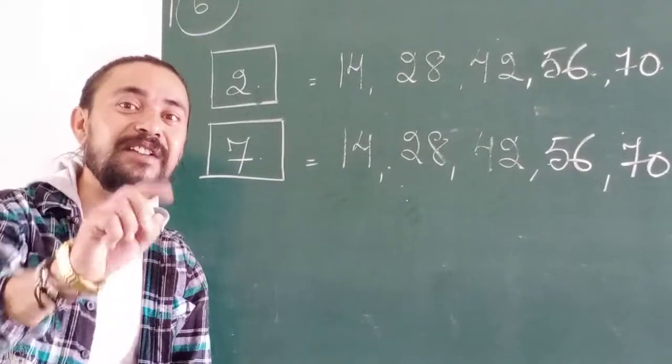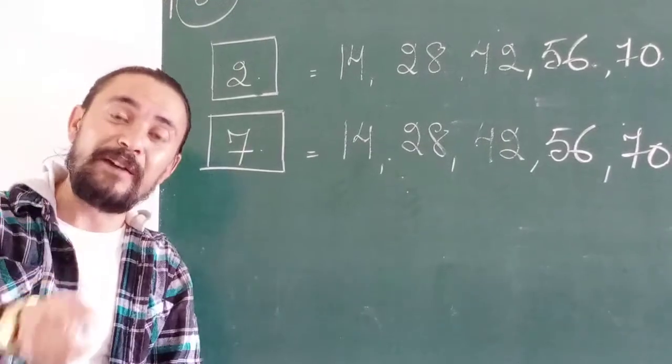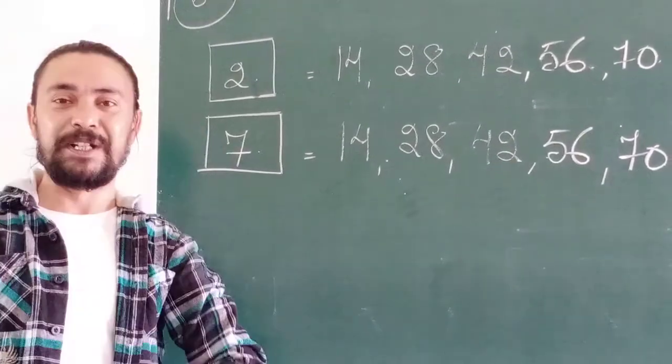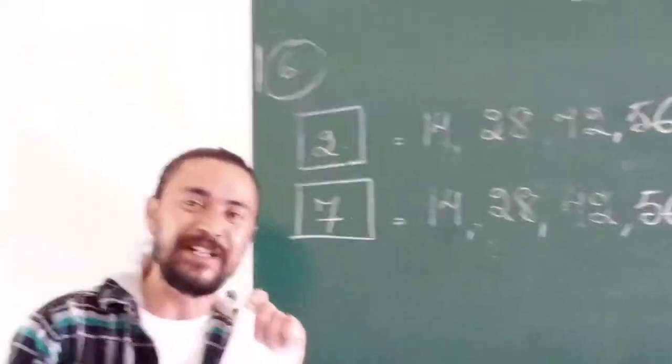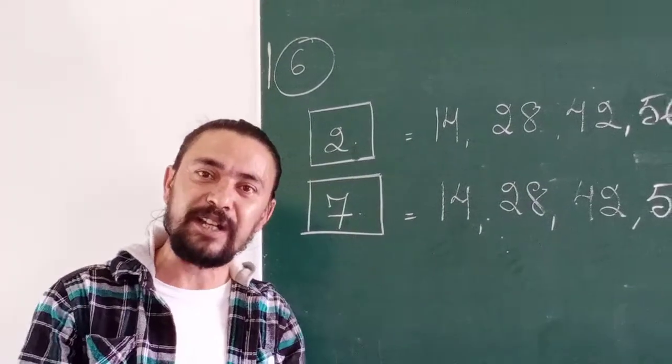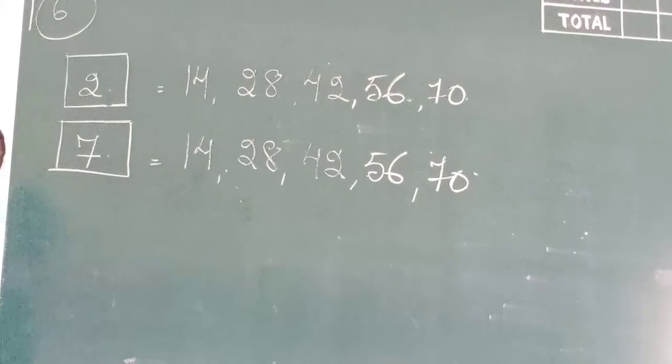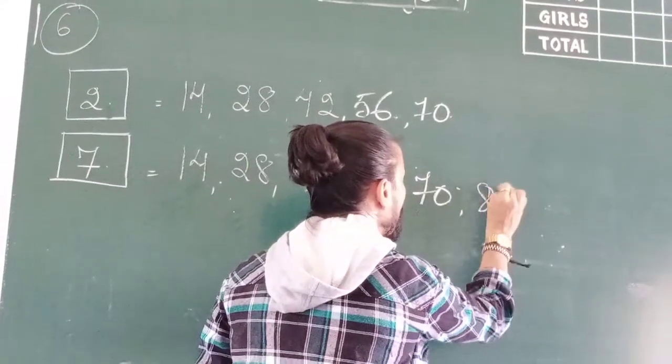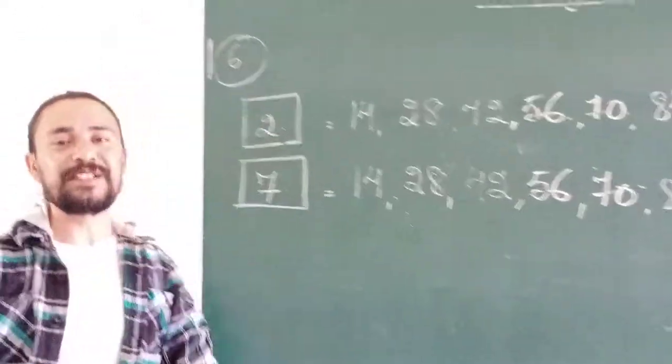7, 10s, 7, 11s are 77. 77 is an odd number. It cannot be divided by 2. 7, 11s are 77, it's an odd number. So it won't fall in the multiples of 2. You have to take the multiples of 7 that are even numbers. All multiples of 7 that are even numbers will also be a multiple of 2 because 2 divides all even numbers. Next number, 7, 12s are 84. 84 is an even number. So 84 will fall in 2 times table also.